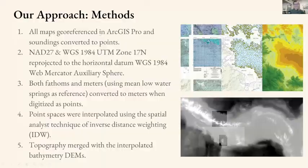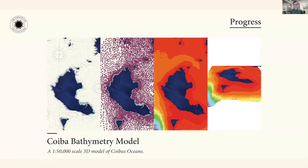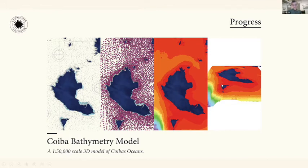We merged the bathymetric digital elevation model with the NASA Shuttle Radar Topography Mission terrain data to create a fluid topo-bathymetric model of all Panama and the surrounding oceans. Here's an example of the workflow: the island of Coiba surrounded by historical bathymetry was converted to points, then interpolated to create a digital elevation model, which can also be used in 3D workspaces.